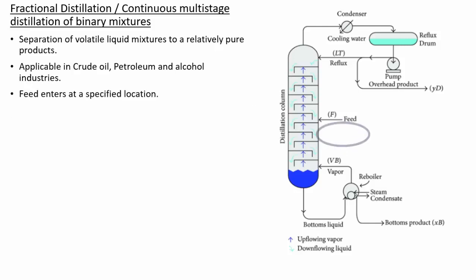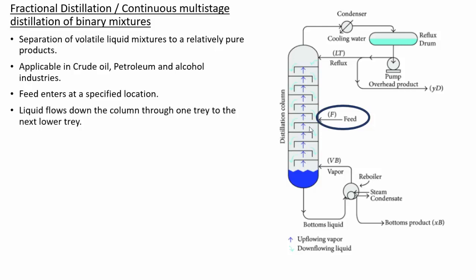The main process involves a feed that can be liquid, vapor, or a liquid-vapor mixture — at saturated liquid or saturated vapor condition. In this binary mixture case, the feed contains components A and B, where A is the more volatile component. The feed enters at a suitable position; depending on the type of mixture and temperature, the feed can enter at different tray locations.